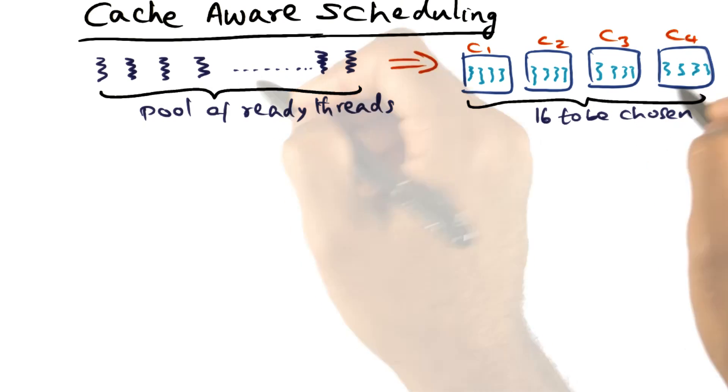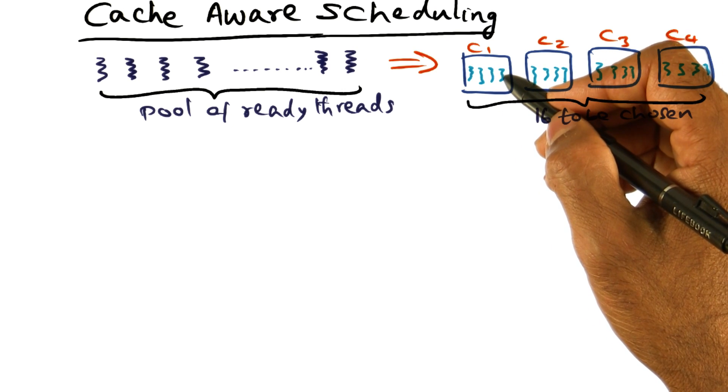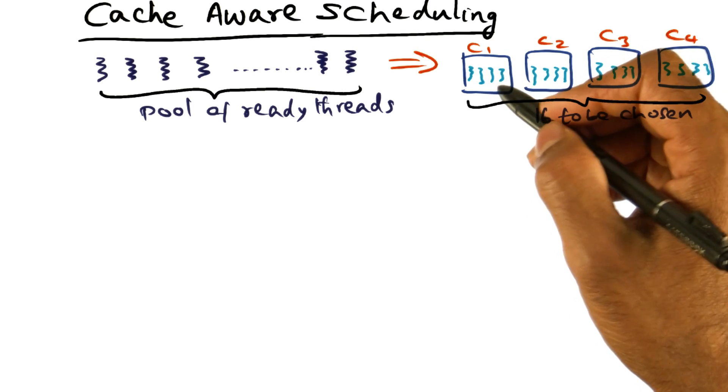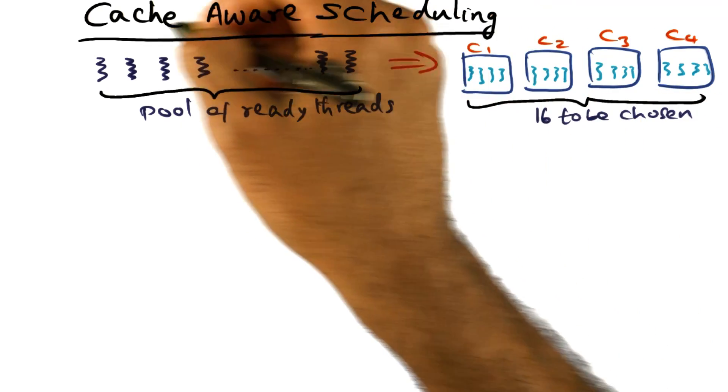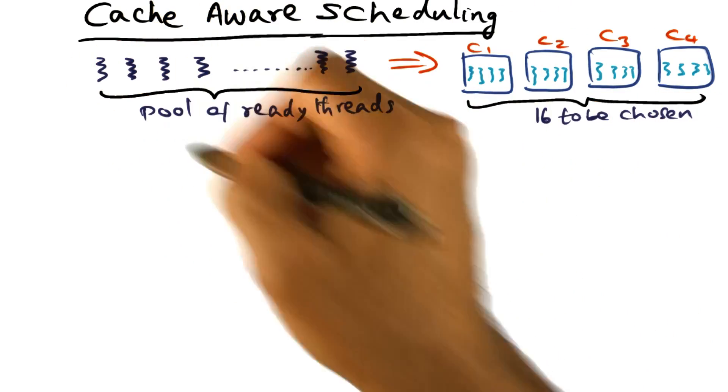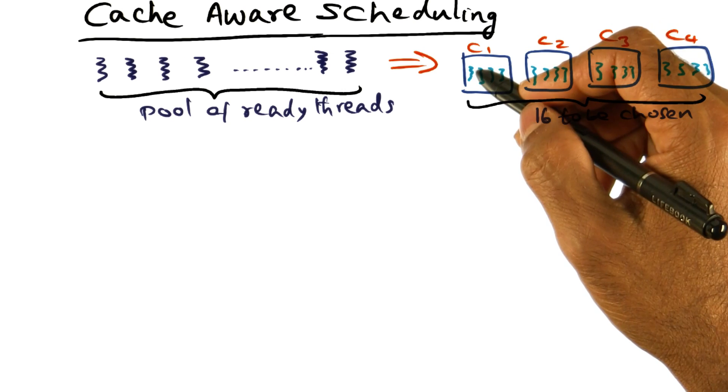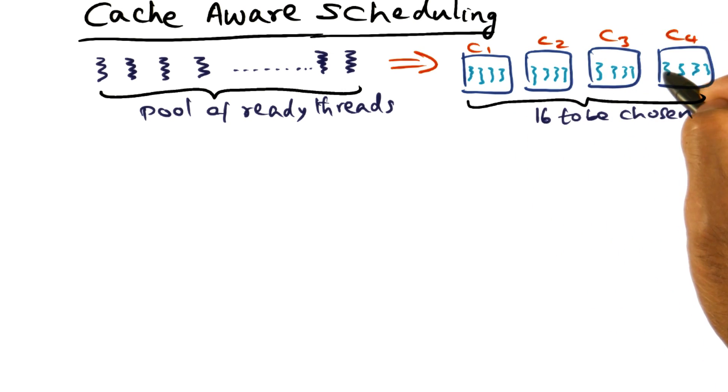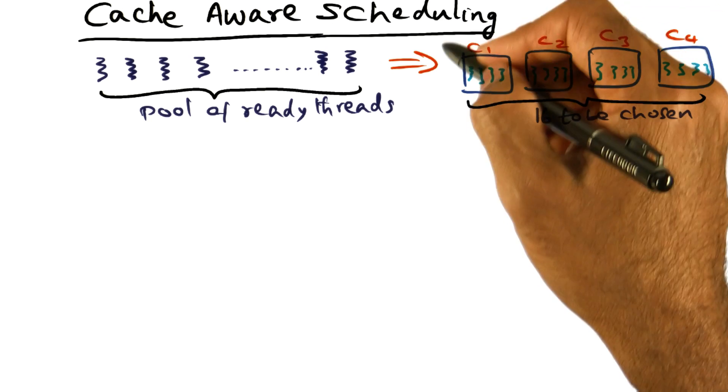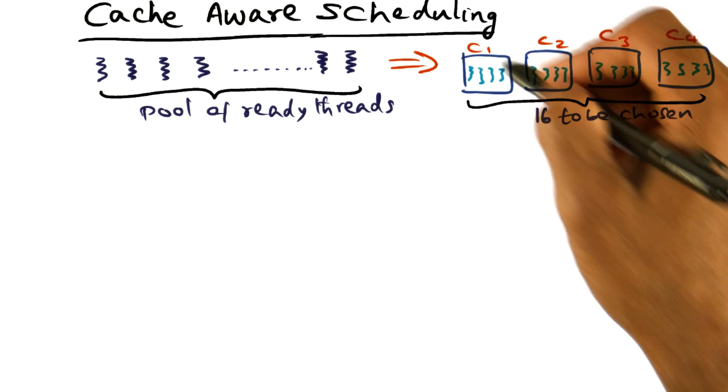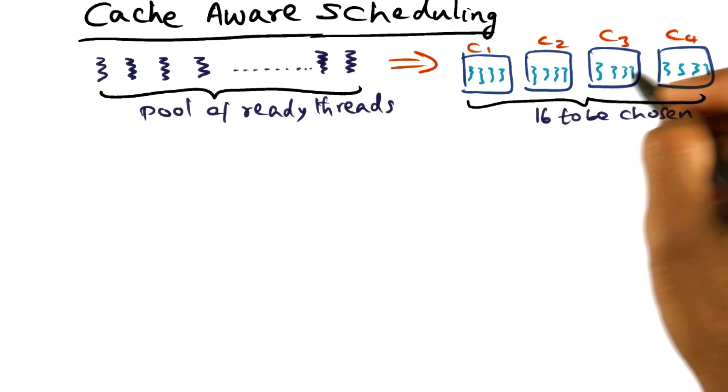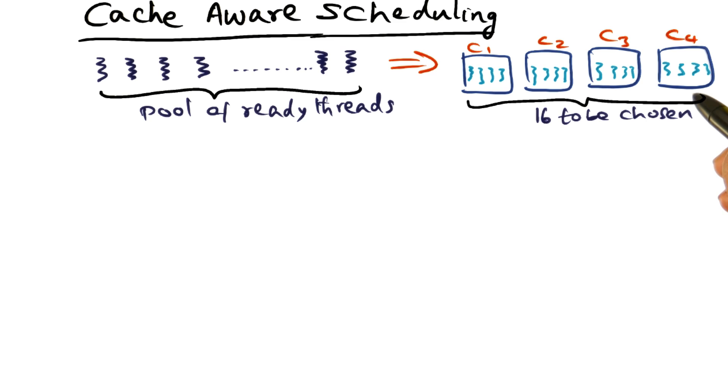So I have 32 ready threads, and I have a four-way multi-core CPU, meaning that there are four cores in the CPU, and each core is four-way hardware multi-threaded. In other words, at any point of time, the operating system can choose from this pool of ready threads 16 threads to be run on the processor. Because that's the number of hardware multi-threads that are available if you pool together all the four cores. Together, they have 16 hardware threads that can be run on the CPU at any point of time.